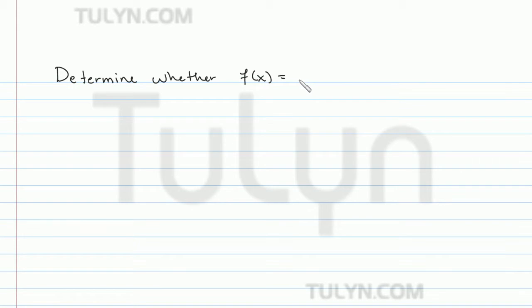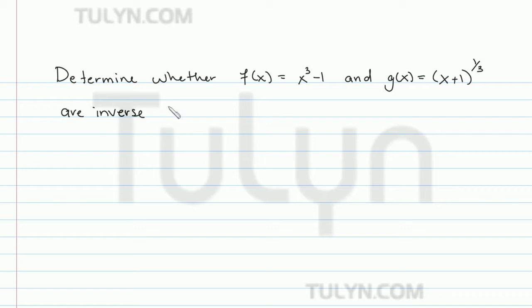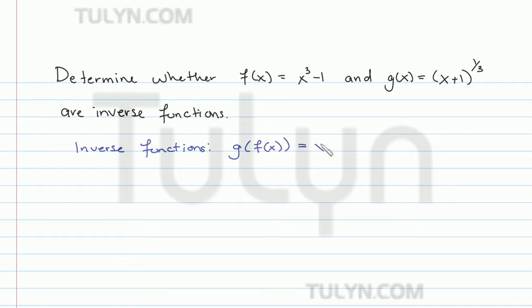Determine whether f(x) = x³ - 1 and g(x) = (x + 1)^(1/3) are inverse functions. To be inverse functions they have to satisfy two things: if you compose one with the other, g(f(x)) must equal x, and f(g(x)) must also equal x. These are the two conditions that have to be satisfied in order to determine whether these two functions are inverses.